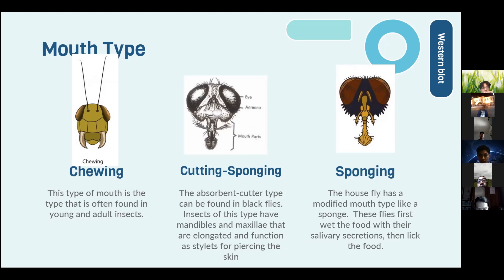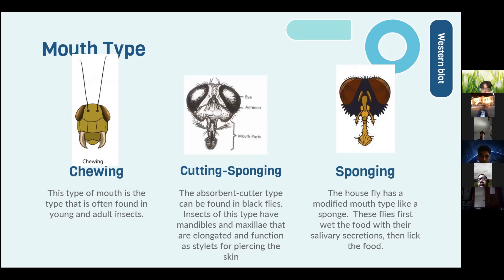The second mouth type is cutting or piercing-absorbing, which can be found in plant-feeding insects. These insects have mandibles and maxillae that are elongated and function as stylets for piercing the skin. Third is sponging — houseflies have a modified mouth type like a sponge; they first soften the food with their salivary secretion, then lick the food.